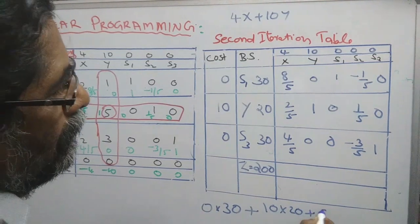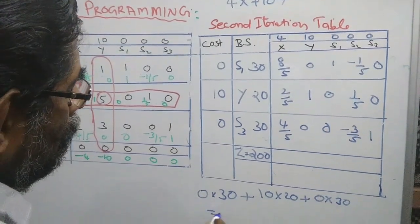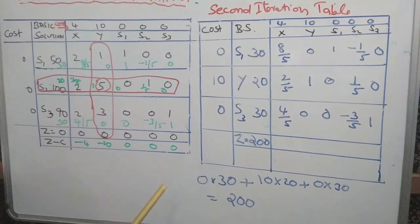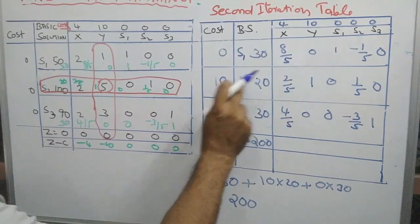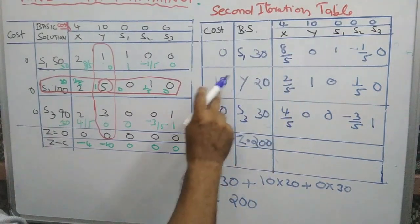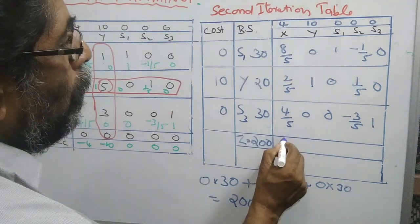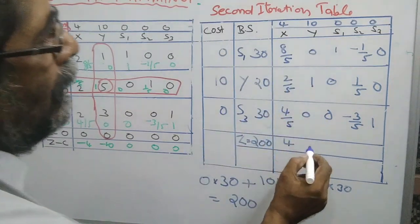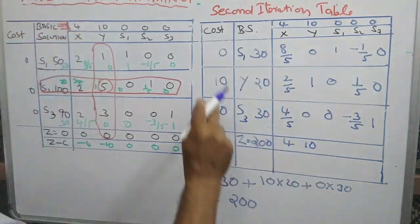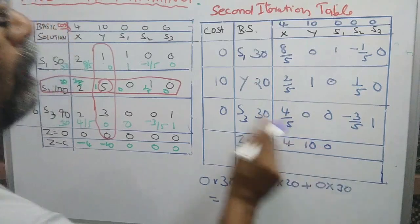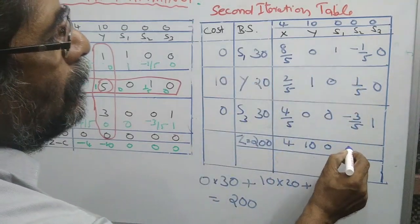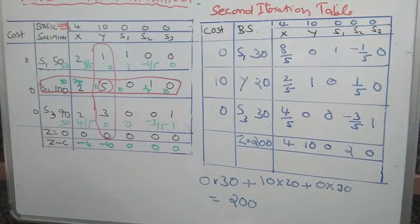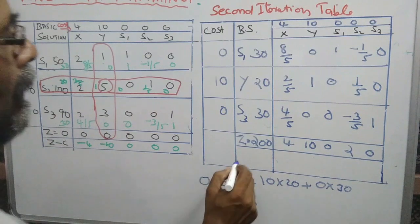The value of Z equals 200. Then: 0 into 8 by 5, plus 10 into 2 by 5 — that is 20 by 5, which equals 4. Then: 0 into 0, plus 10 into 1, plus 0 into 0 — that is 10. Then 10 into 1 by 5 equals 2. Since the S1 and S3 cost elements are 0, the computation is straightforward.